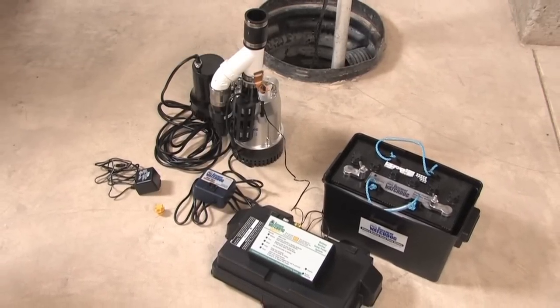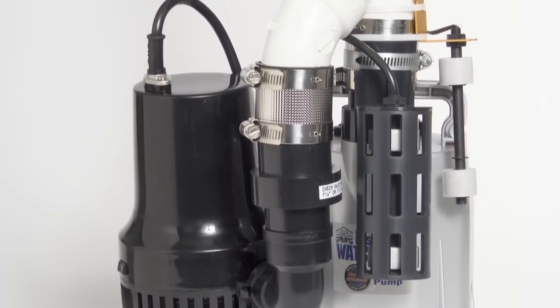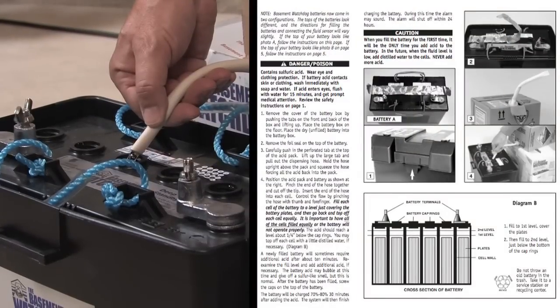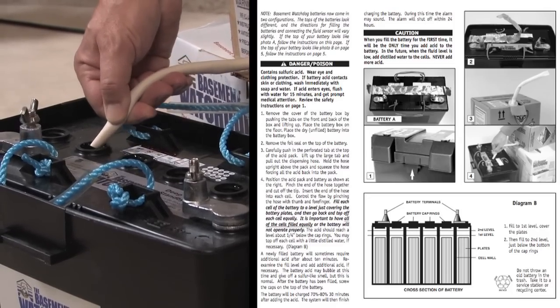Installing a basement watchdog combination system is quick and easy because the AC system and the backup system are already assembled in the carton. Before you begin the installation, fill the battery according to the instructions in the manual. This will reduce the time the sump pump system is out of service.